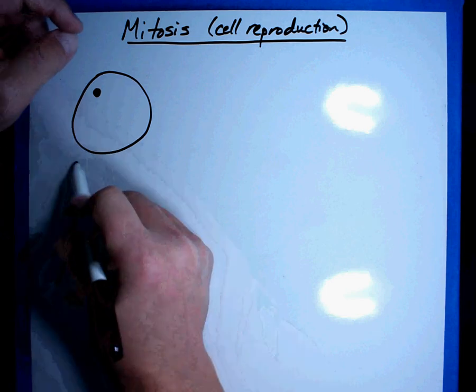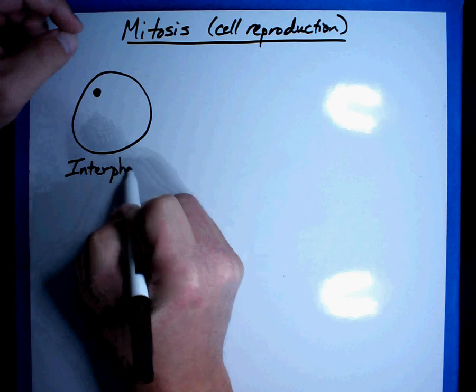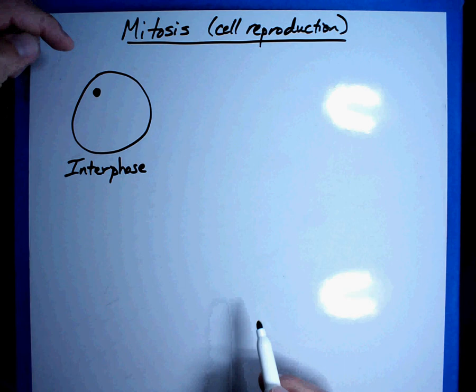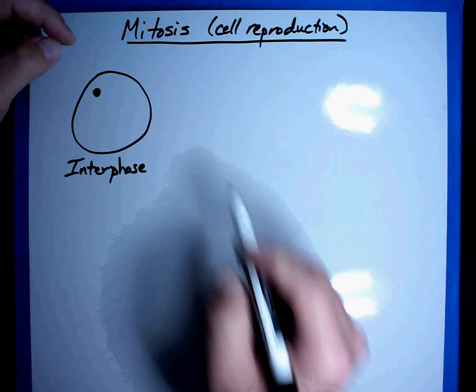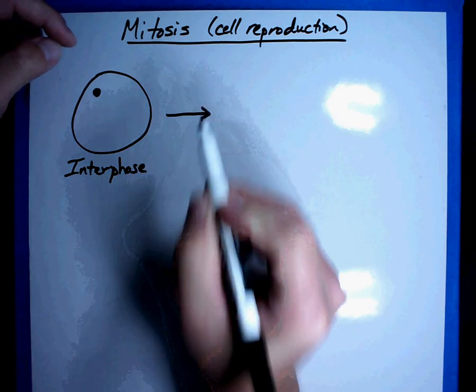Most of the cells in our body are in this phase right here called interphase. They're doing their job, they're operating the way they're supposed to, everything's working out great. Now let's say something has happened and we now have to make a new cell. Well, everything jumps into action and we start the process of mitosis.